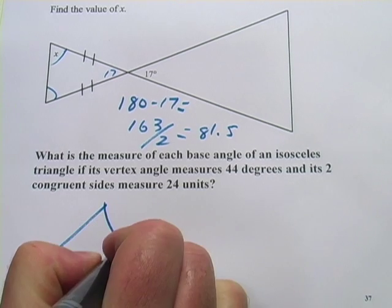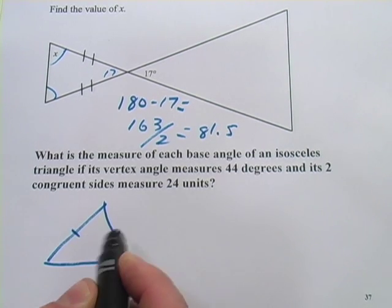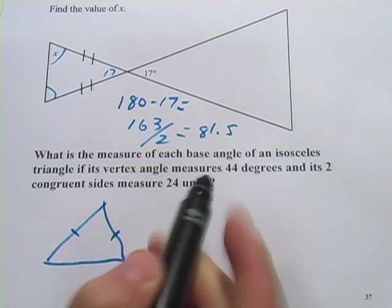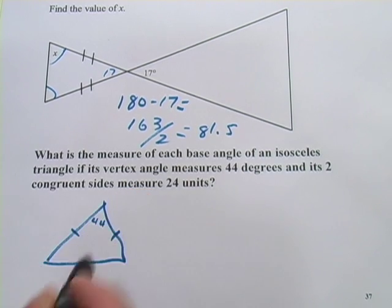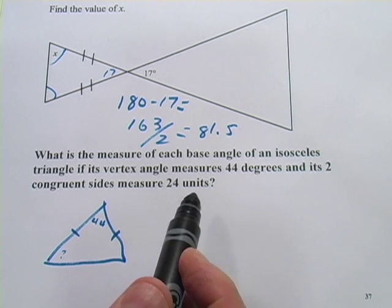So let's just draw a little picture here. So there's my triangle. These two sides are the same. And it says the vertex angle measures 44 degrees. And we're trying to find the base angle. They're also telling us how long these sides are. I'm not even going to put that information in here because you don't need it.